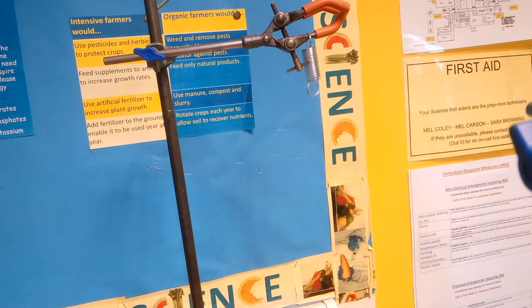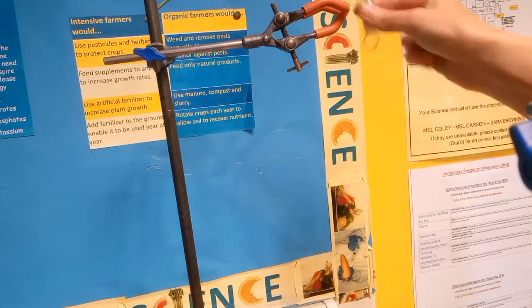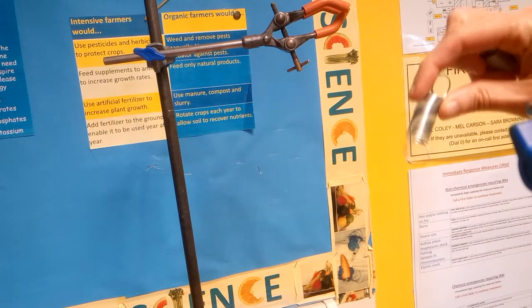Can you see that the spring's no longer returning to its original length? I've got another identical spring here. You can see that was its original length. This has been overstretched. It's gone past its elastic limit. It's plastically deformed.